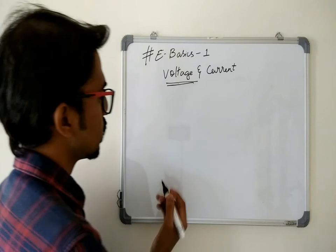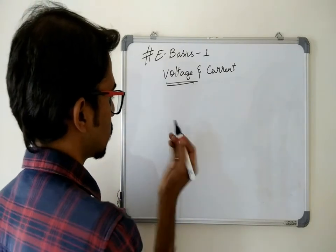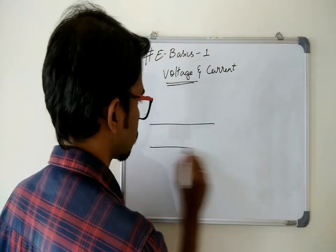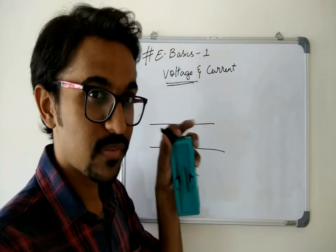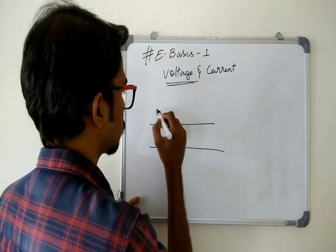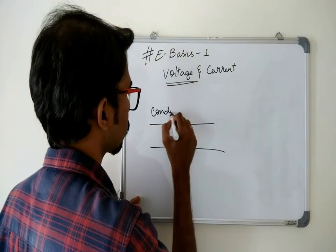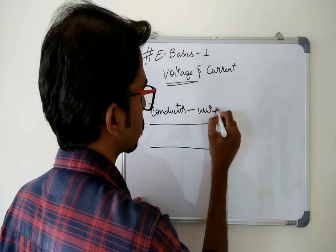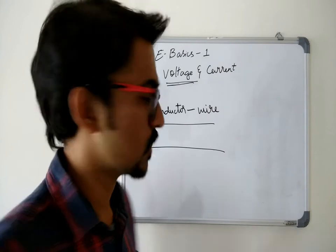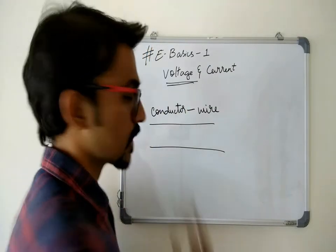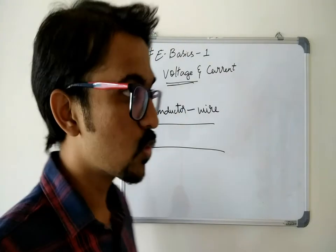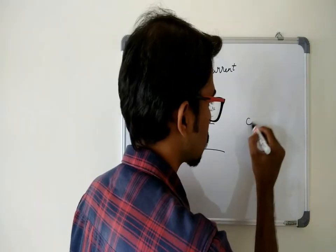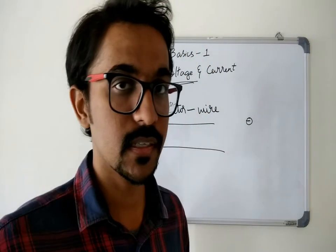So voltage can be considered as, consider a conductor. I'm just magnifying things for you to explain. So this is a conductor or a wire, maybe a copper wire, aluminum wire, whatever. So consider a conductor like this and electrons. Electron is a negatively charged particle.